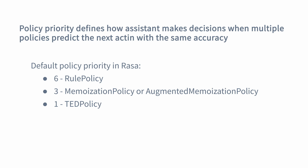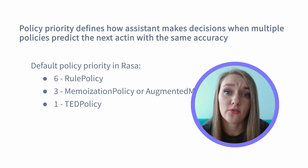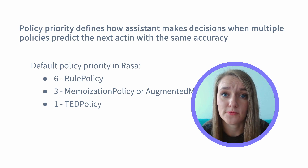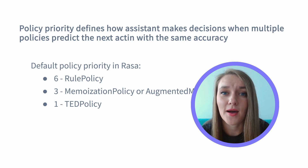If two dialogue management policies predict the next best action with the same confidence, the decision is made based on policy priority. Rasa open source comes with a default policy priority where a higher number means higher priority. While policy priority is something you can technically configure yourself, we highly advise you to use the default values that come with Rasa open source, because changes in policy priority can result in unexpected and undesired assistant behaviors.